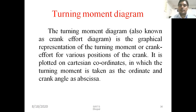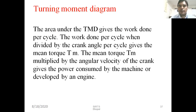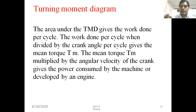Another definition of the turning moment diagram: the area under the turning moment diagram gives the work done per cycle. By the help of the TMD, we can determine the area under the curve, which gives the work done per cycle. The work done per cycle, when divided by the crank angle per cycle, gives the mean torque. Work is equal to torque multiplied by crank angle theta. The mean torque multiplied by the angular velocity of the crank gives the power consumed or delivered by the engine.